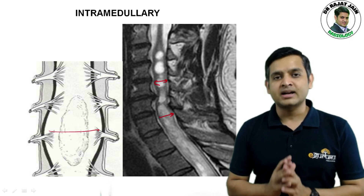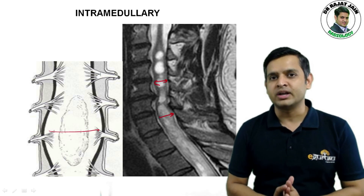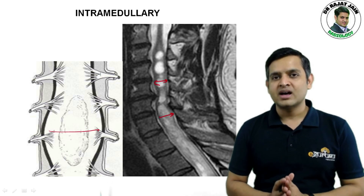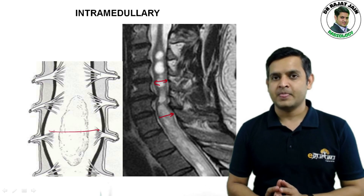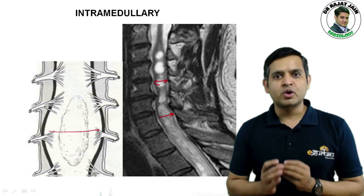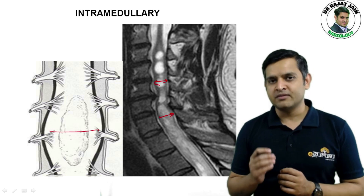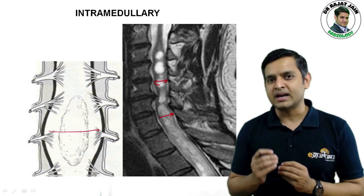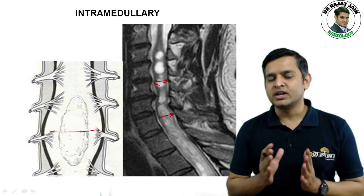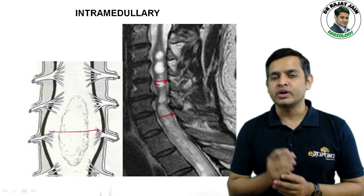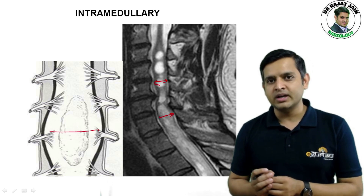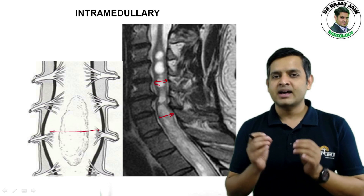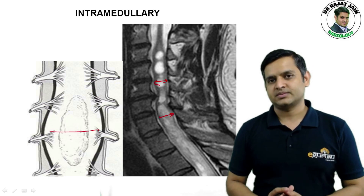Important tumors that are intramedullary include astrocytoma, ependymoma, and hemangioblastoma. It is an important duty of a radiologist that whenever we see a spinal mass, we have to divide them into intra-medullary, intra-dural, extra-medullary, and extra-dural masses.